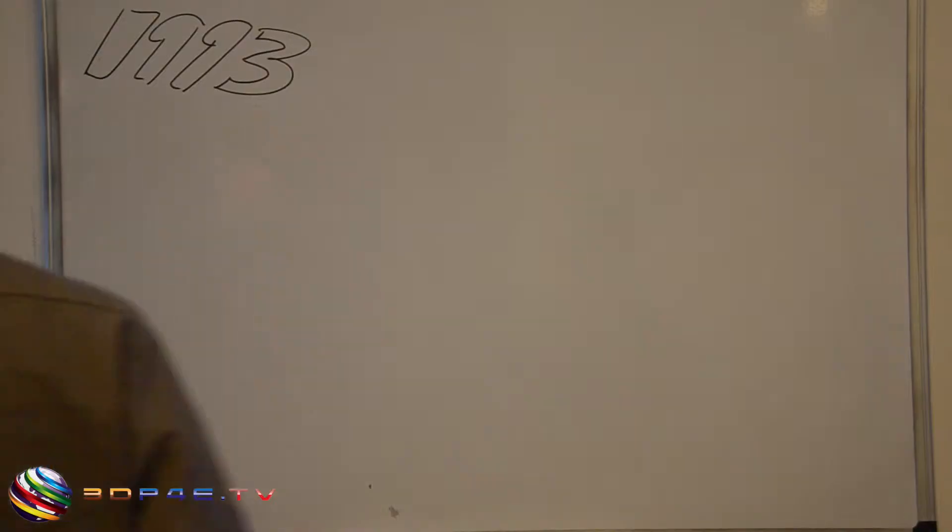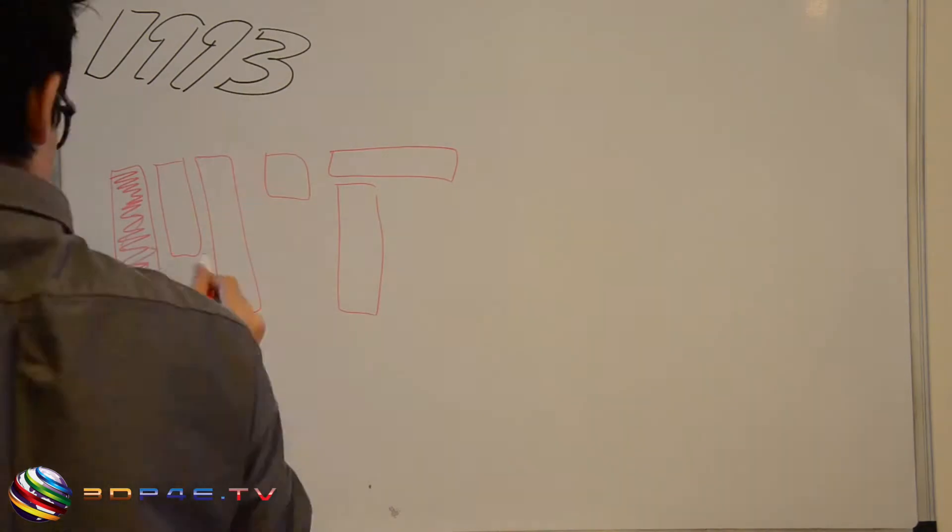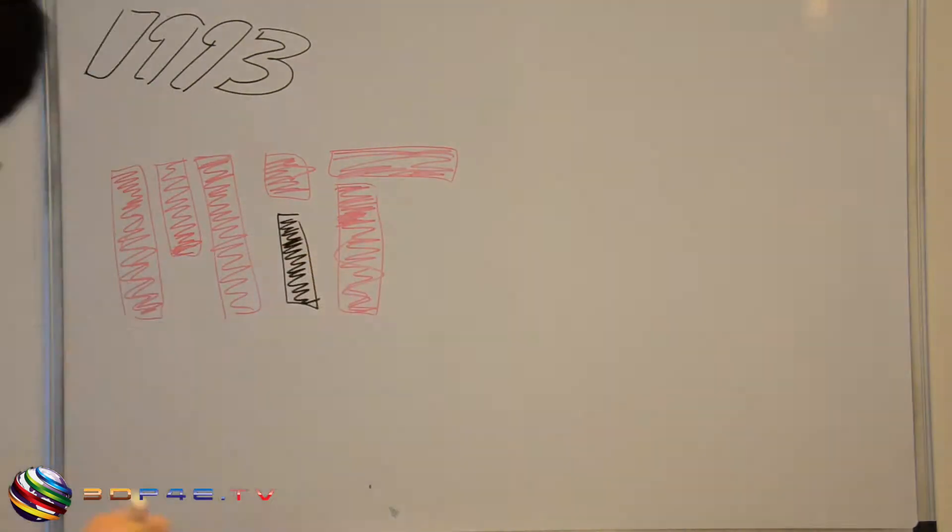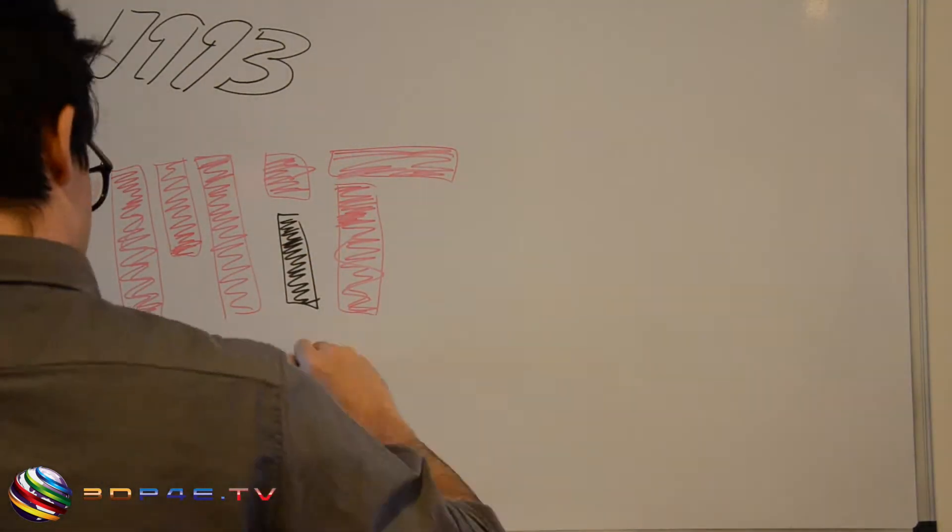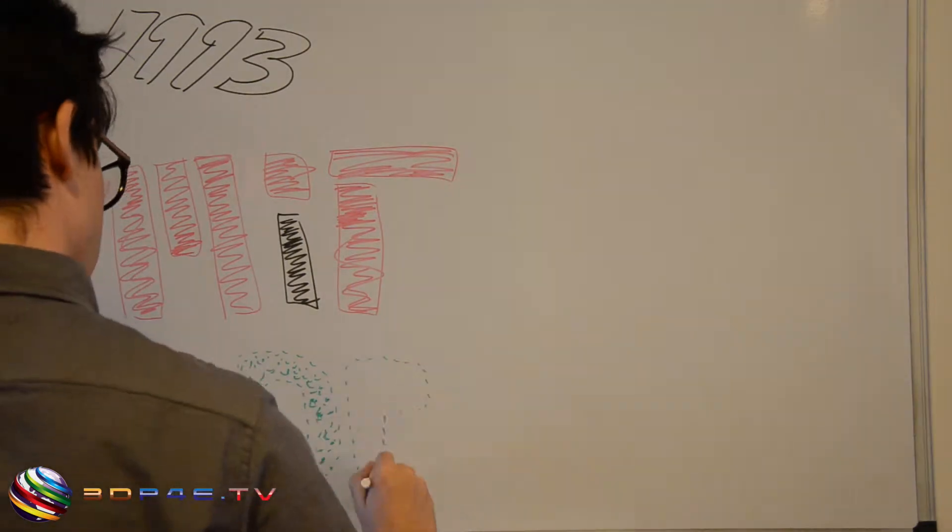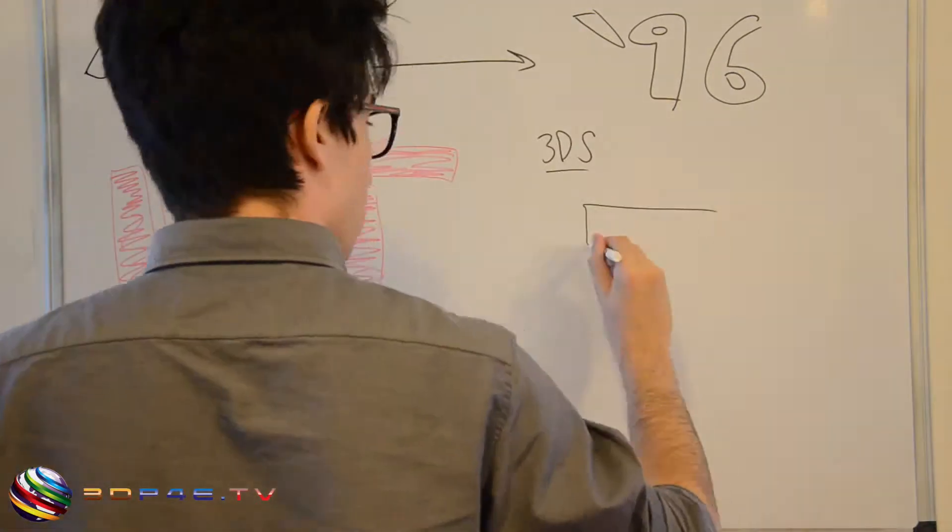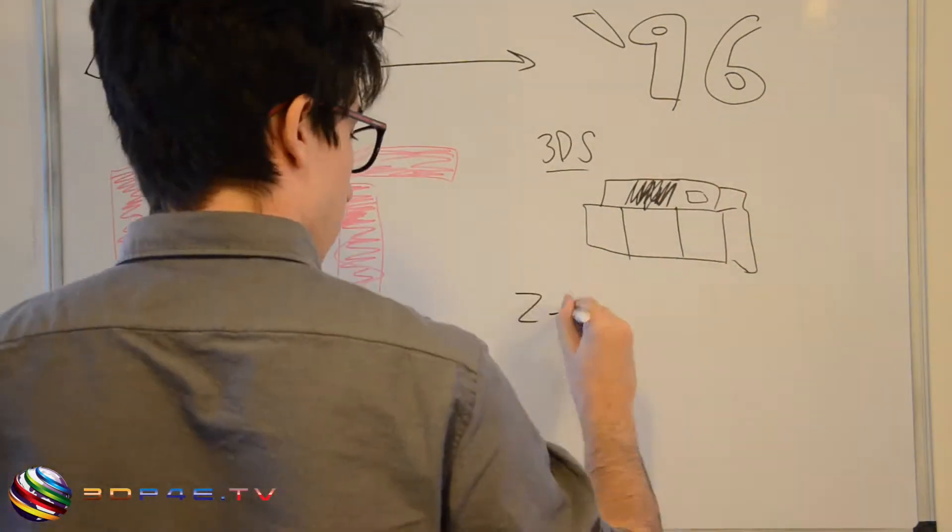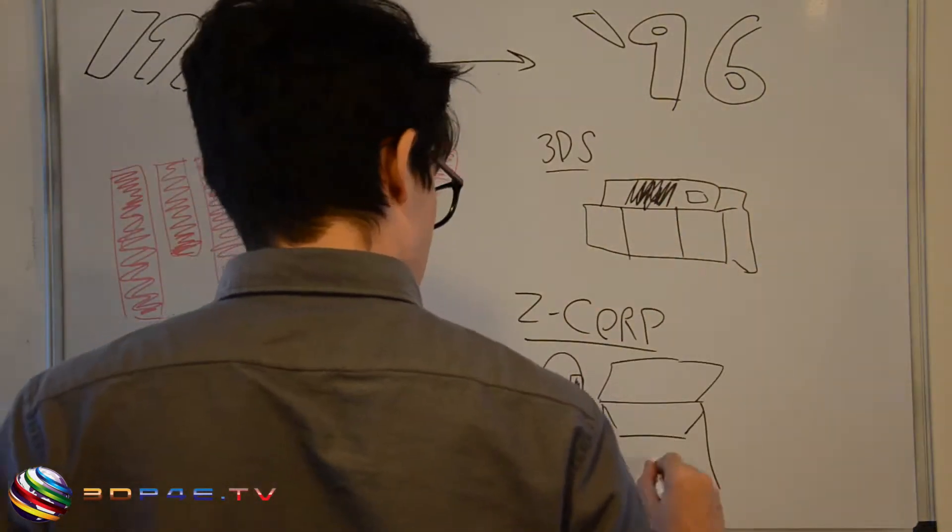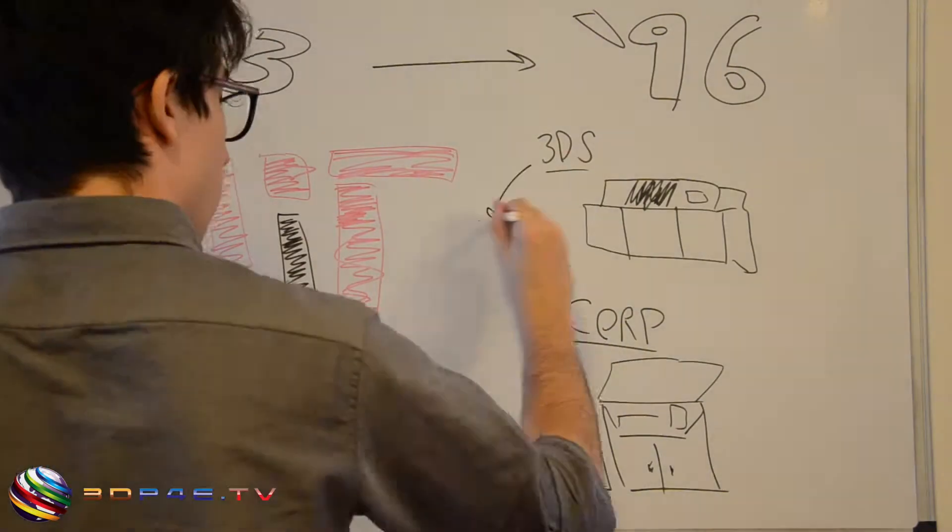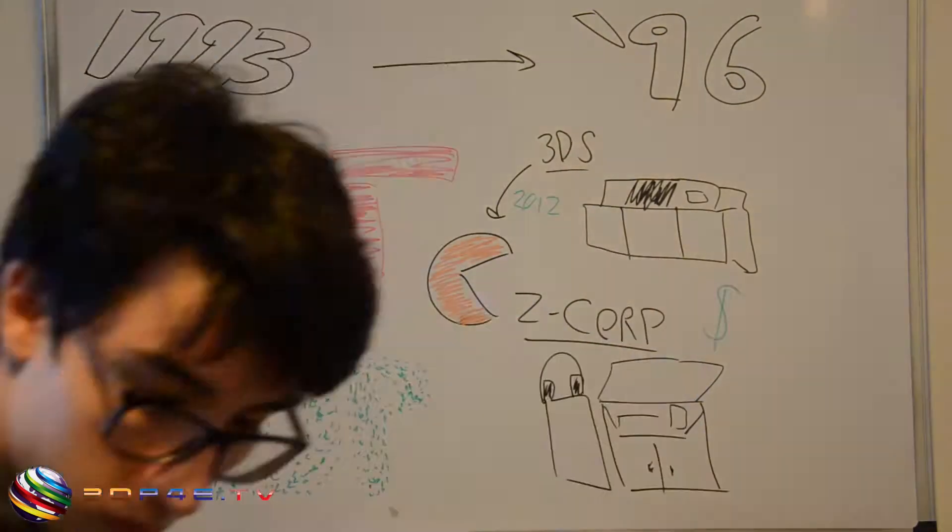In 1993, 3DP was invented at MIT which licenses the technology to several companies. Three years later in 1996, some of the first 3D printers to use this technology come to market: 3D Systems Actua 2100 and Z Corporation Z402. Z Corp was acquired by 3D Systems in 2012 for $135.5 million.